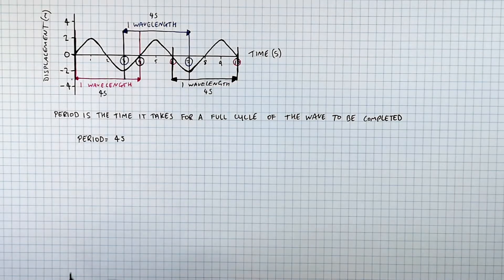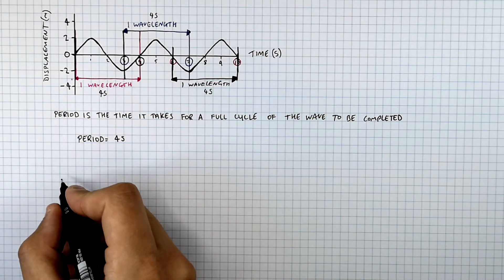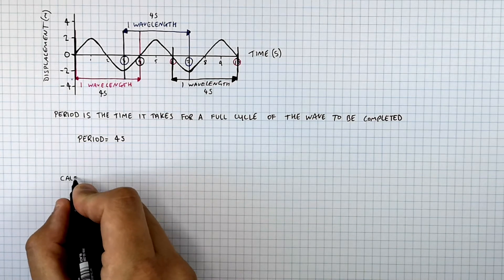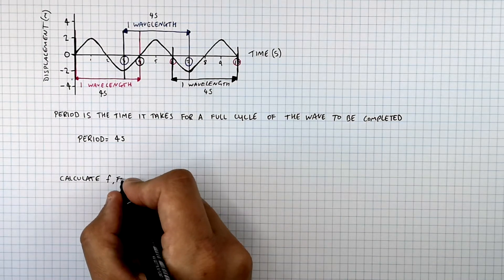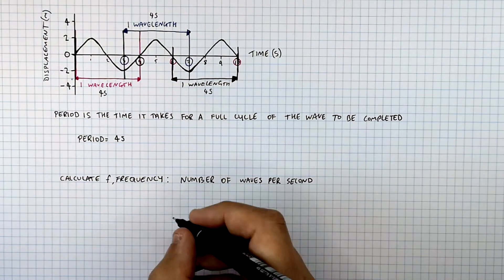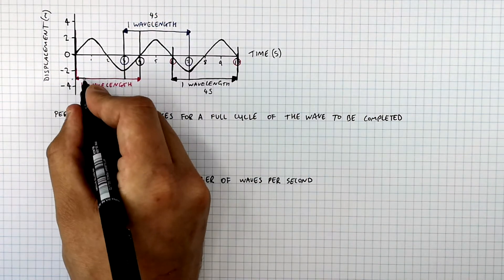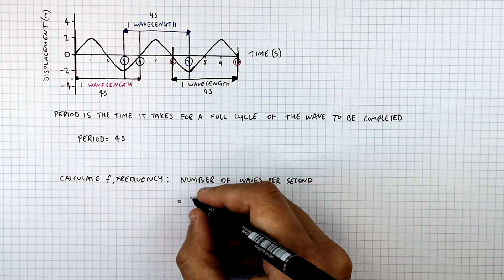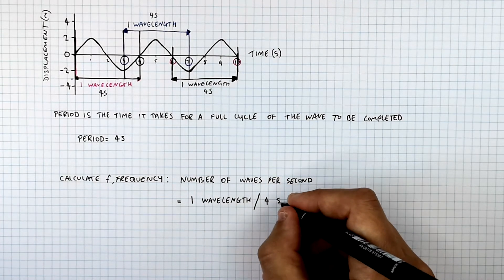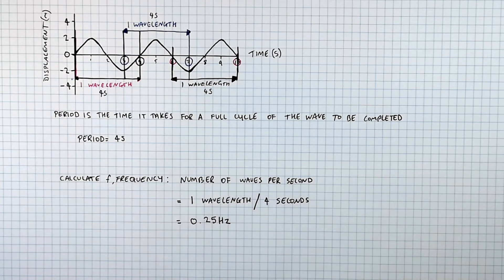Let's now see how we can relate the period of a wave to the frequency of the wave. To calculate the frequency, it's the number of waves per second. It took four seconds for one wavelength to be completed, so we do one wavelength divided by four seconds, which gives a frequency of 0.25 hertz.